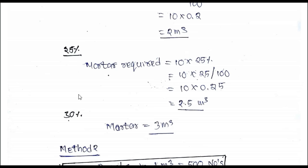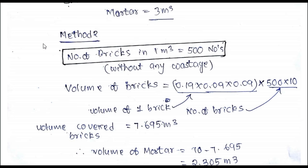Let's move to Method 2. Number of bricks in 1 cubic meter equals 500 numbers. If you are watching my previous video, you know how this 500 numbers came. I mentioned here without any wastage. In field, when we unload the bricks, some of the bricks may be broken, so I am not considering any extra bricks for those wastages.